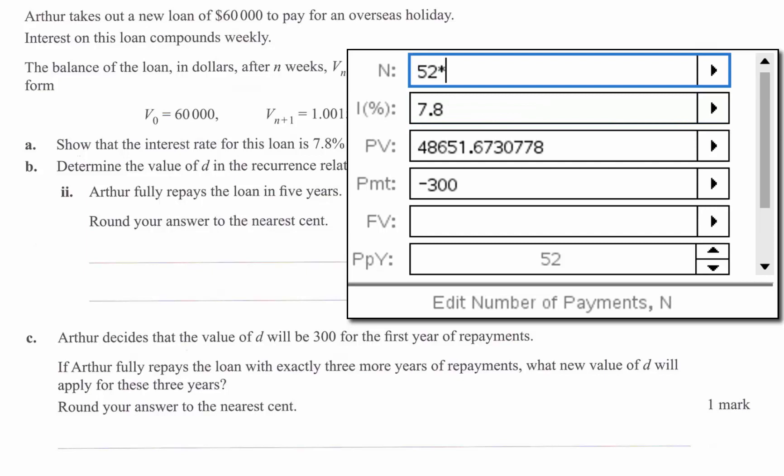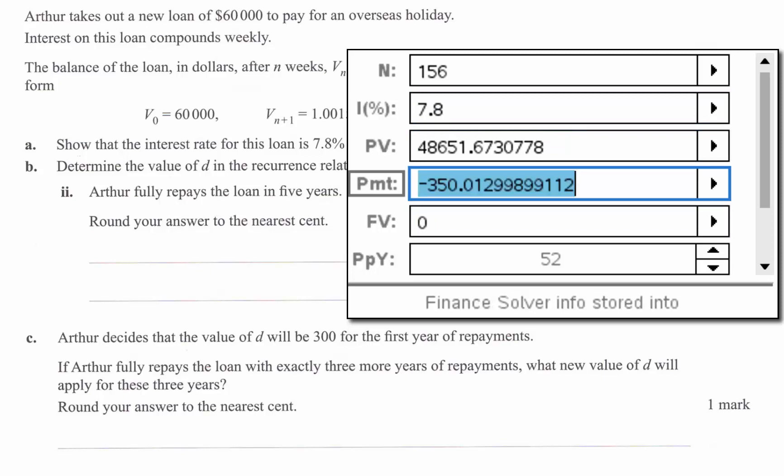Now we go back up here it's 52 times three more years we want to pay it off in. We do want to pay it off. So we want the future value to be zero. We press enter here. We get negative 350.0129.